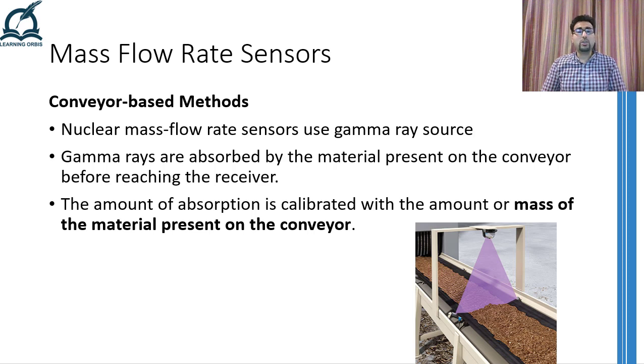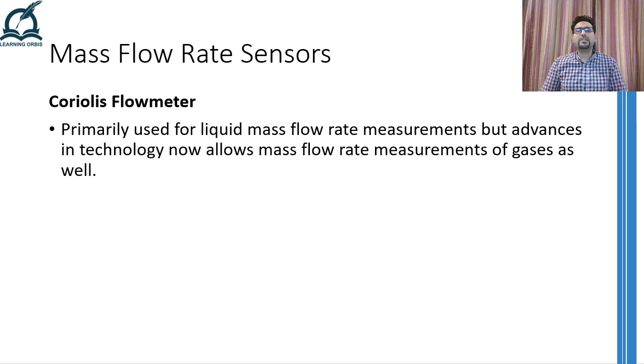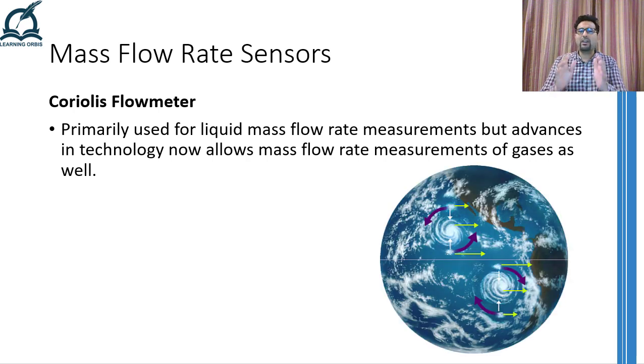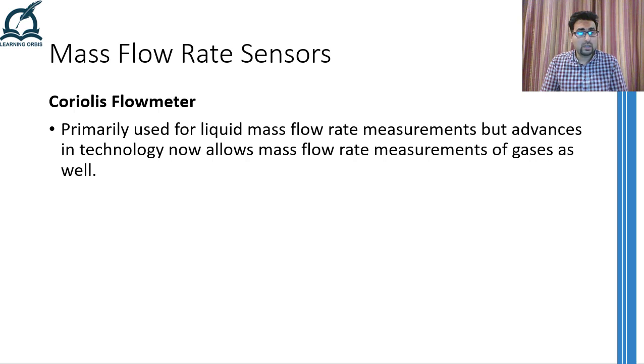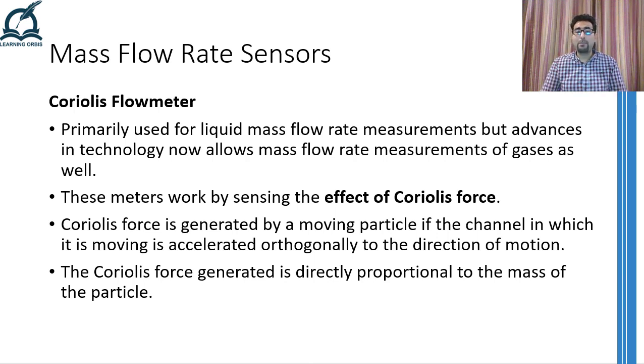The next mass flow rate sensor is called Coriolis flow meter, and it is quite widely used mass flow rate sensor for mass flow rate measurements of liquids. However, the advanced versions of it can be used for gases as well. The main working principle of this sensor is based on generation of Coriolis force and measuring its effect. You might have heard the word Coriolis in relation to meteorology or some similar situation because Coriolis force is responsible for the cyclones and the movement pattern of clouds all around our Earth. However, sticking to our topic, Coriolis force is generated when a particle moving in a particular direction is accelerated orthogonally to the direction of motion. This force is responsible for making the particle go in a cyclone-like motion. The Coriolis force which the particle experiences is directly proportional to the mass of the particle.